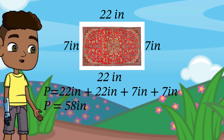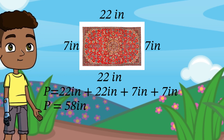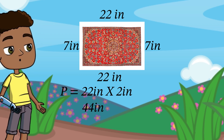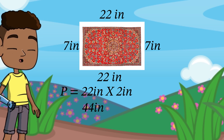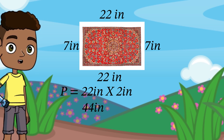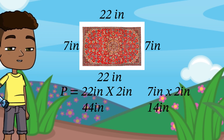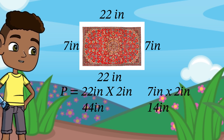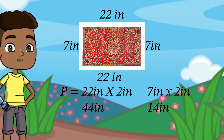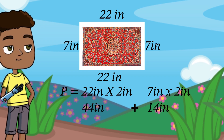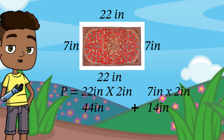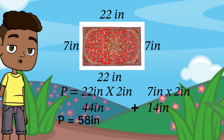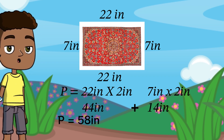Let's find the perimeter using multiplication. 22 times 2 equals 44, and 7 times 2 equals 14. 14 plus 44 is equal to 58 inches. Here are a few you can try on your own.